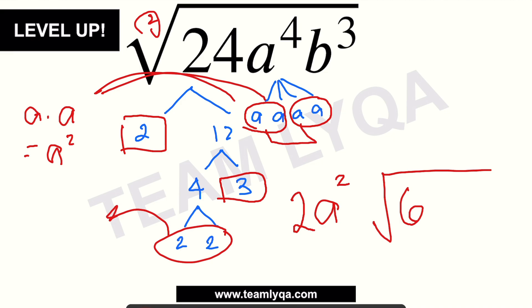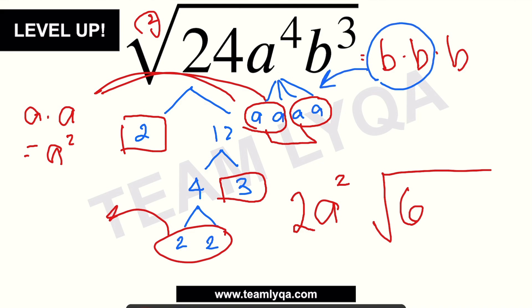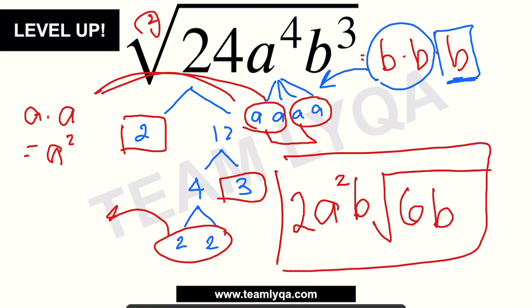Doon na tayo sa b: b cubed, ibig sabihin niyan is b times b times b — tatlo sila. Dahil dalawang hinahanap natin, pwede tayo maglabas ng isang pares, so may isang b sa labas. Pero may tira na isa sa loob. So, ang matitira dito sa loob is 6b. Tapos na tayo sa lahat. Ito na yung ating final answer: 2a squared b times the square root of 6b.